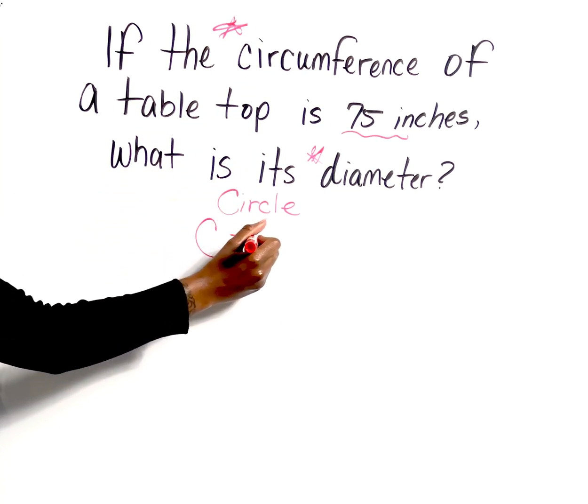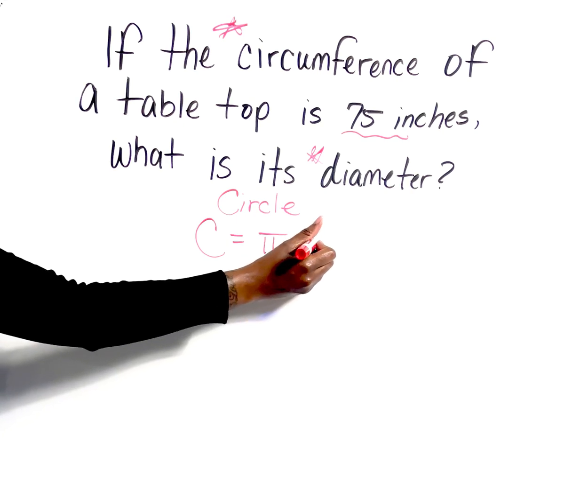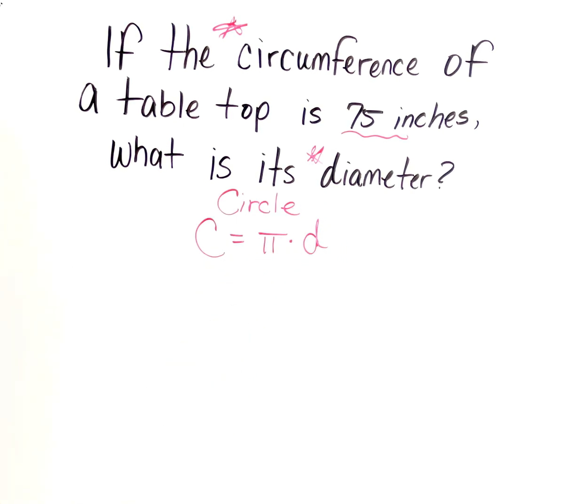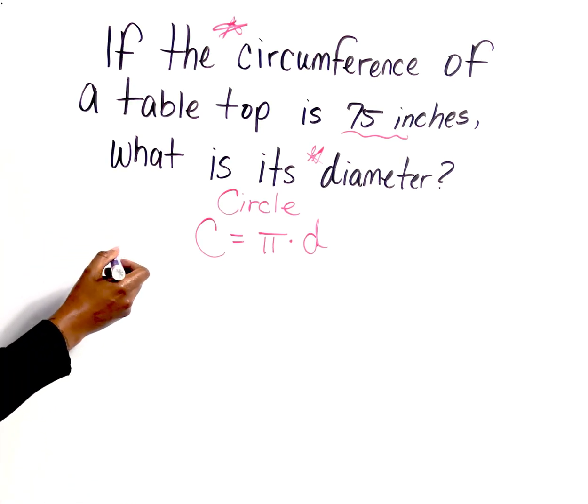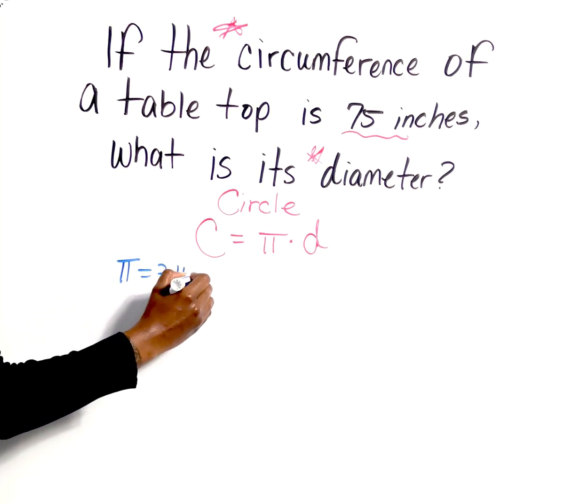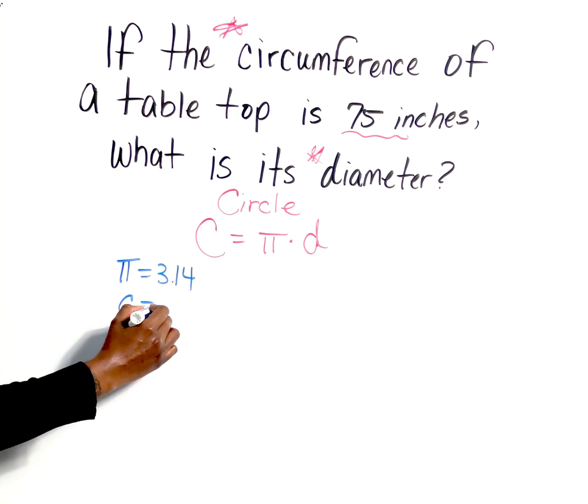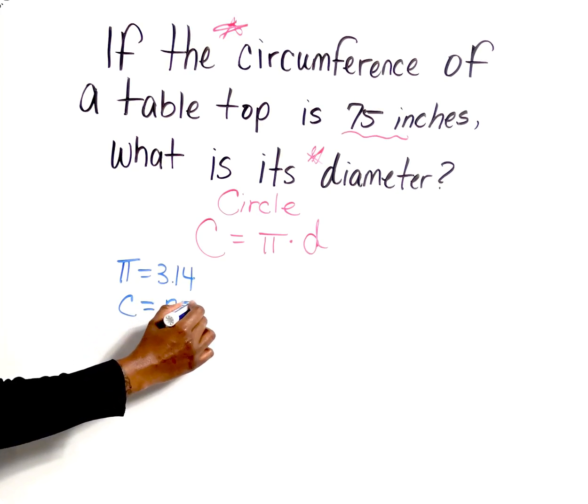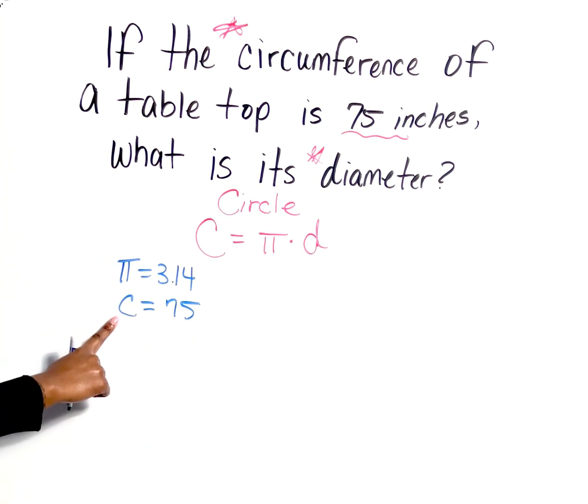Which is π times the diameter. And of course you have to know that π is a given—they will not give that to you. For this example, π is equal to 3.14. And of course we know the circumference is 75.